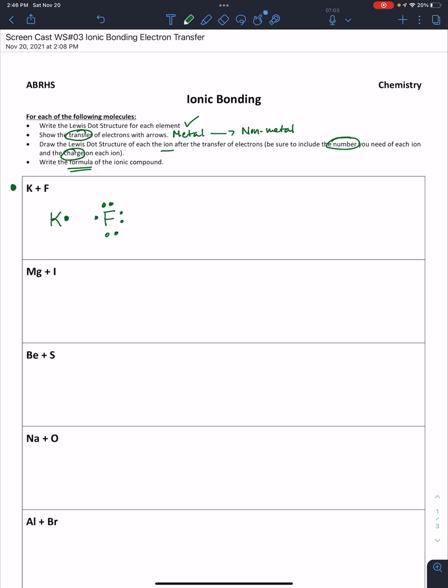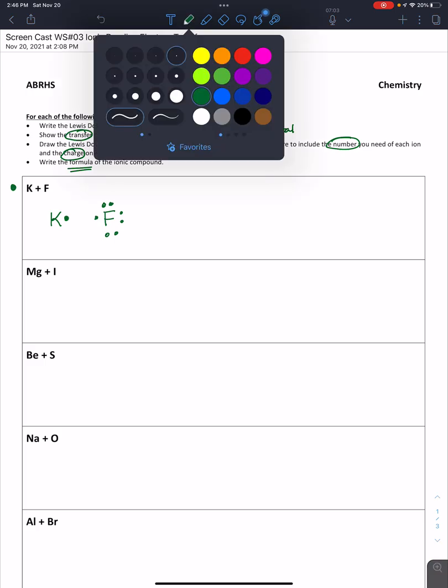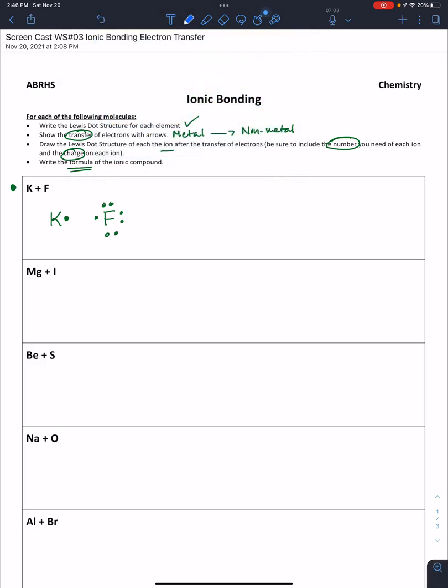For the transfer of electrons, that transfer is always going to occur from the metal to the nonmetal, so we show that with an arrow. Potassium has one to give, fluorine needs one, so our two elements should have their completed octets.